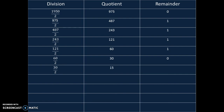30 divided by 2: answer is 15 with remainder 0. 15 divided by 2: answer is 7 with remainder 1. 7 divided by 2: answer is 3 with remainder 1. 3 divided by 2: answer is 1 with remainder 1. 1 divided by 2: quotient is 0 with remainder 1.